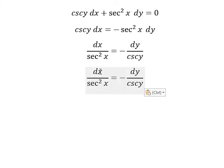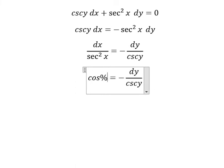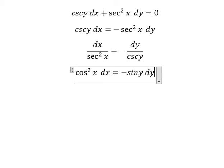Secant of x, that's about cosine x. Cosecant of y, that's about sine y. Next we put the integration for both sides.